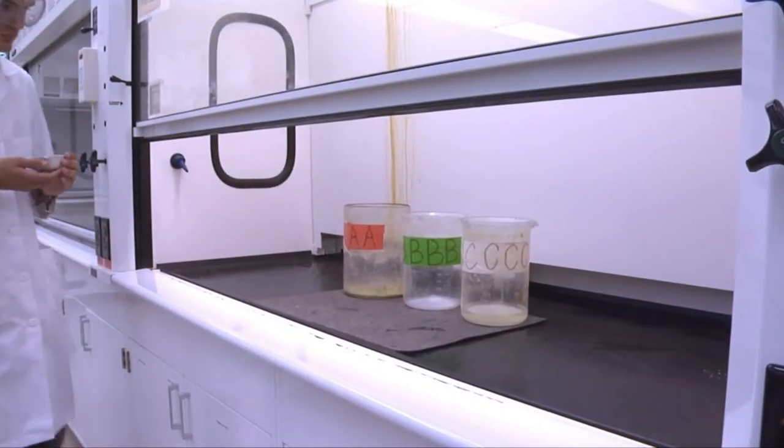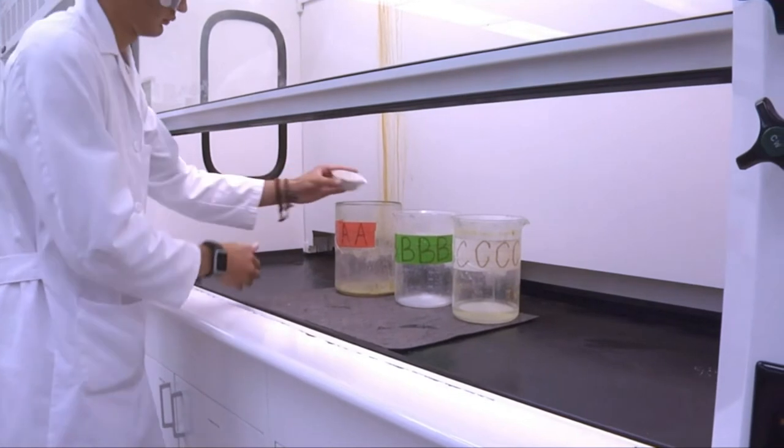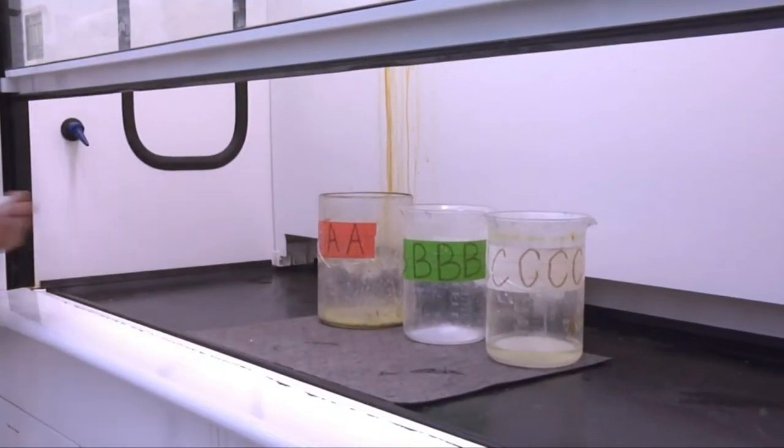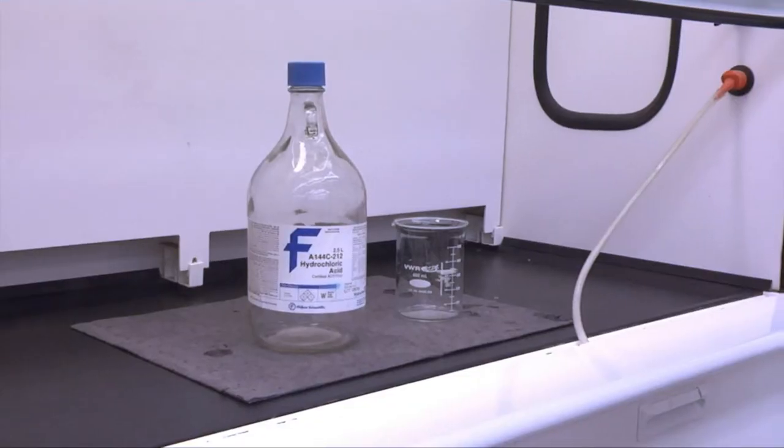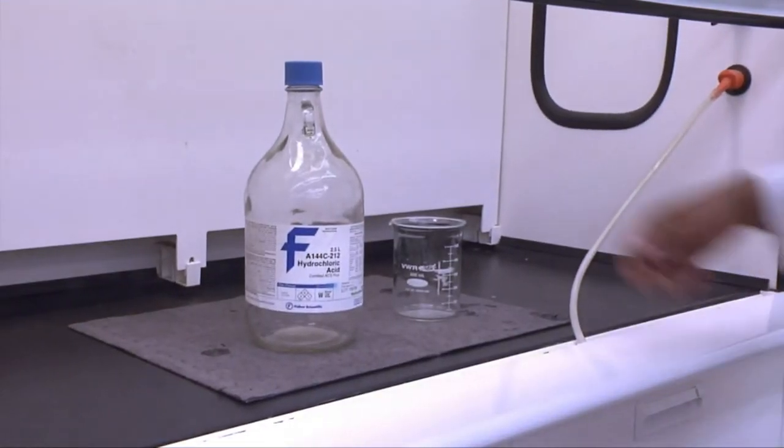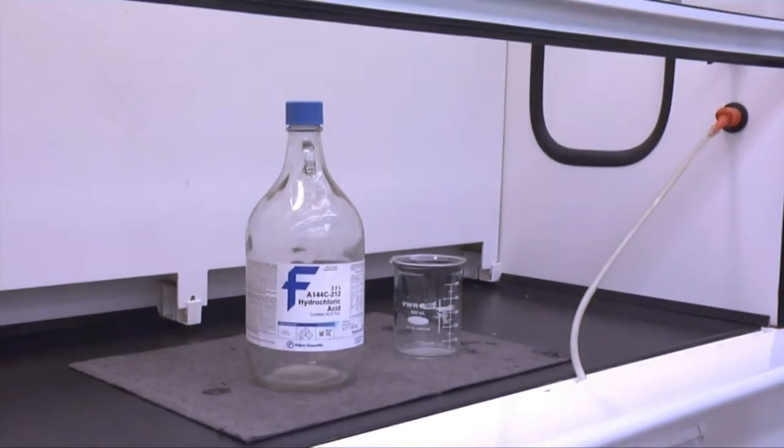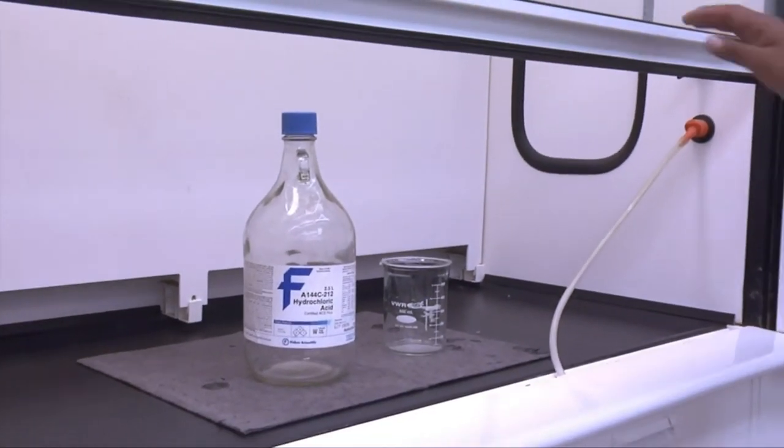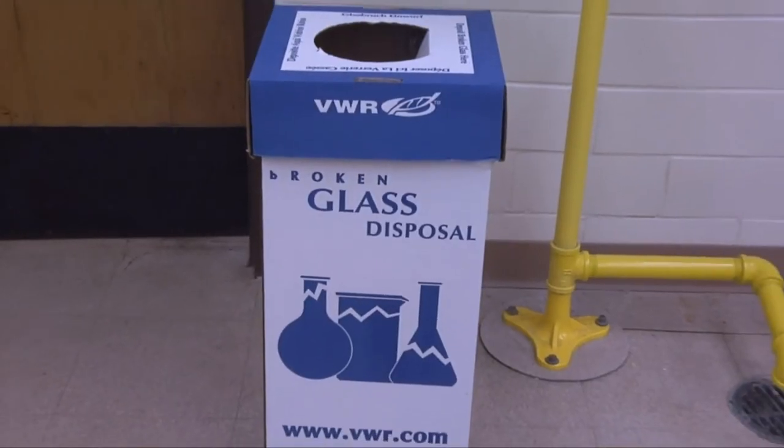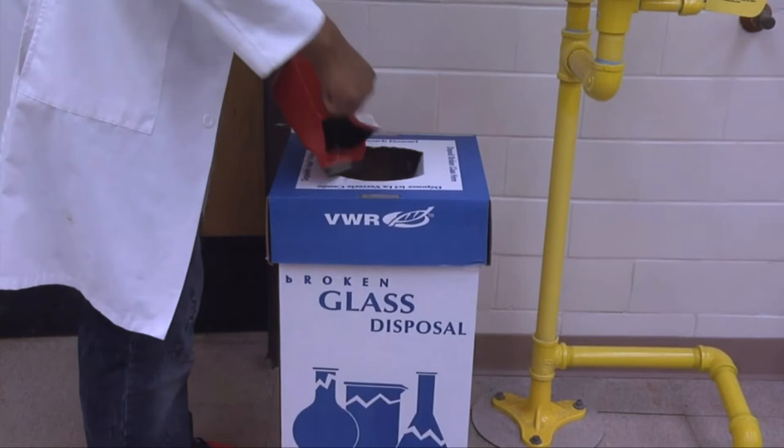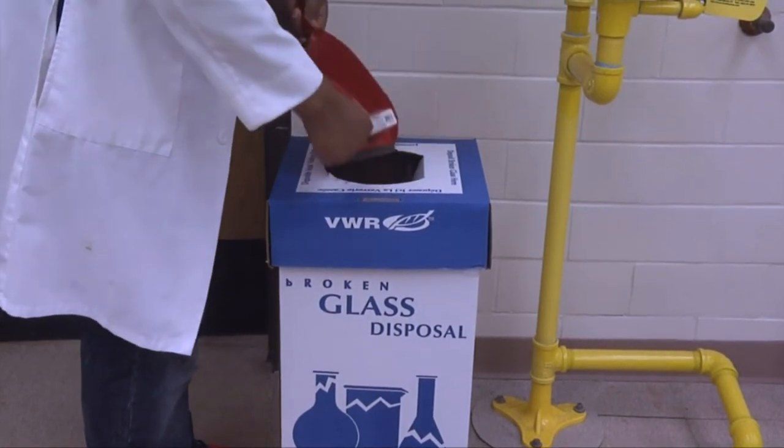Throw away trash in the appropriate containers. Follow the directions of your instructor for discarding waste from that day's work. These instructions must be followed carefully. Disposing of chemical wastes in the wrong way may result in dangerous reactions. Always ask if you are unsure. Broken glass should be discarded in the designated waste containers. Never throw glass away in the trash cans.